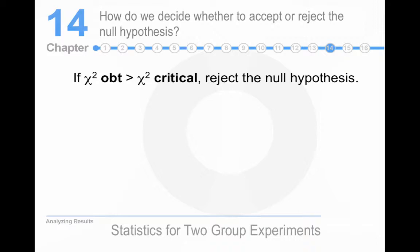What's being unsaid here is that if our obtained chi-square is less than our critical chi-square, we fail to reject the null hypothesis. But this slide is correct. If our obtained value is greater or equal to our critical value, we reject the null hypothesis. If our obtained value is less than our critical value, then we fail to reject the null hypothesis.